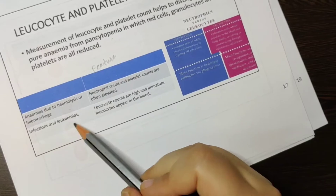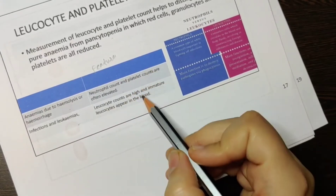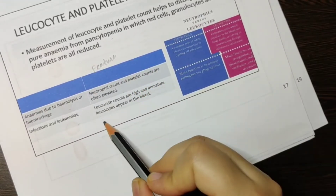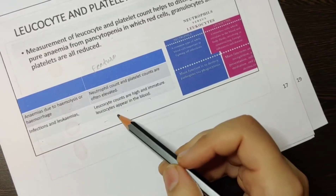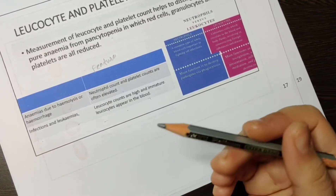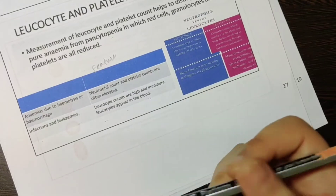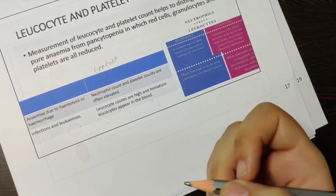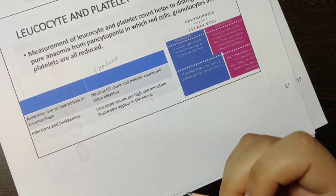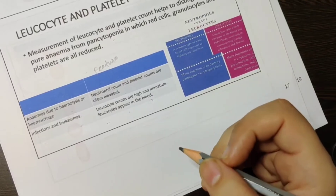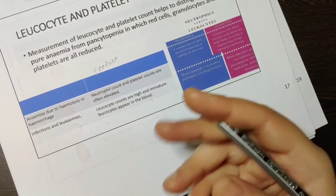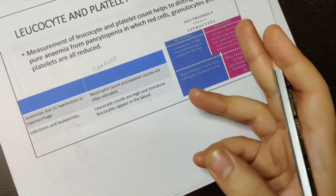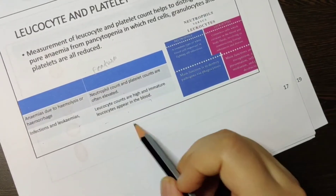In infection and leukemias, the leukocyte counts are high and immature leukocytes are seen in the blood. Because of infection, the body needs to fight — WBCs are the body's defense. So a lot of WBCs come to fight infections or cancer cells. Because you need more, the body produces a lot of cells and most of them will be immature — that is why you have immature leukocytes in the blood.